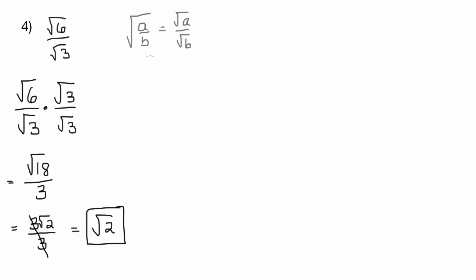We can use that property because instead of writing the square root of 6 over the square root of 3, we can write, we can write, and let me go in blue to show you this second way, we can rewrite the square root of 6 over the square root of 3 as the square root of 6 over 3.